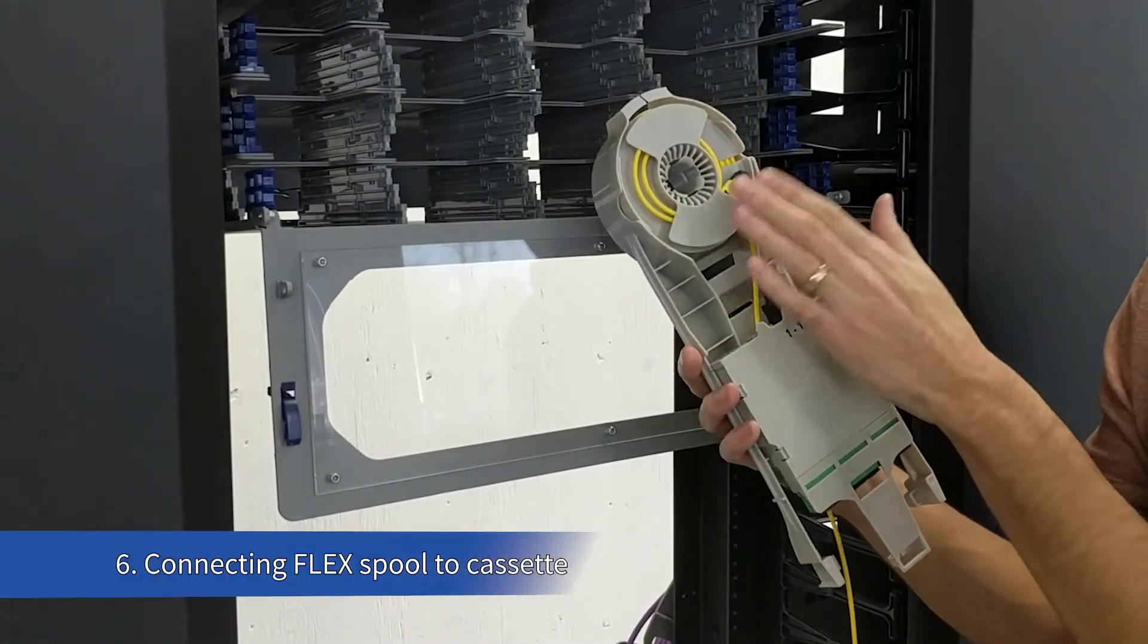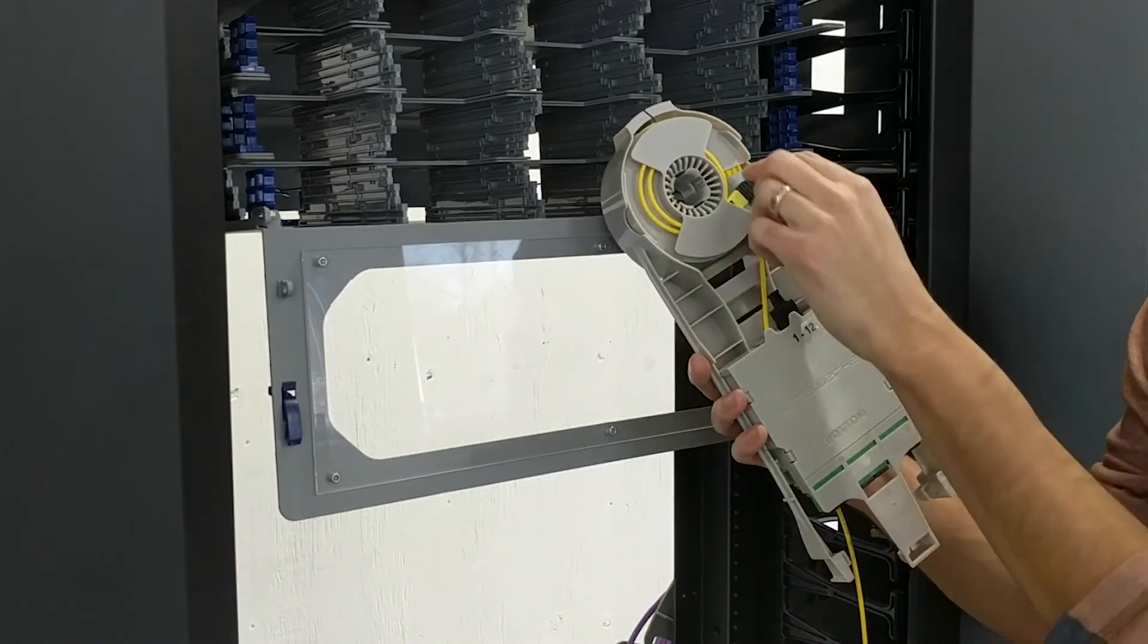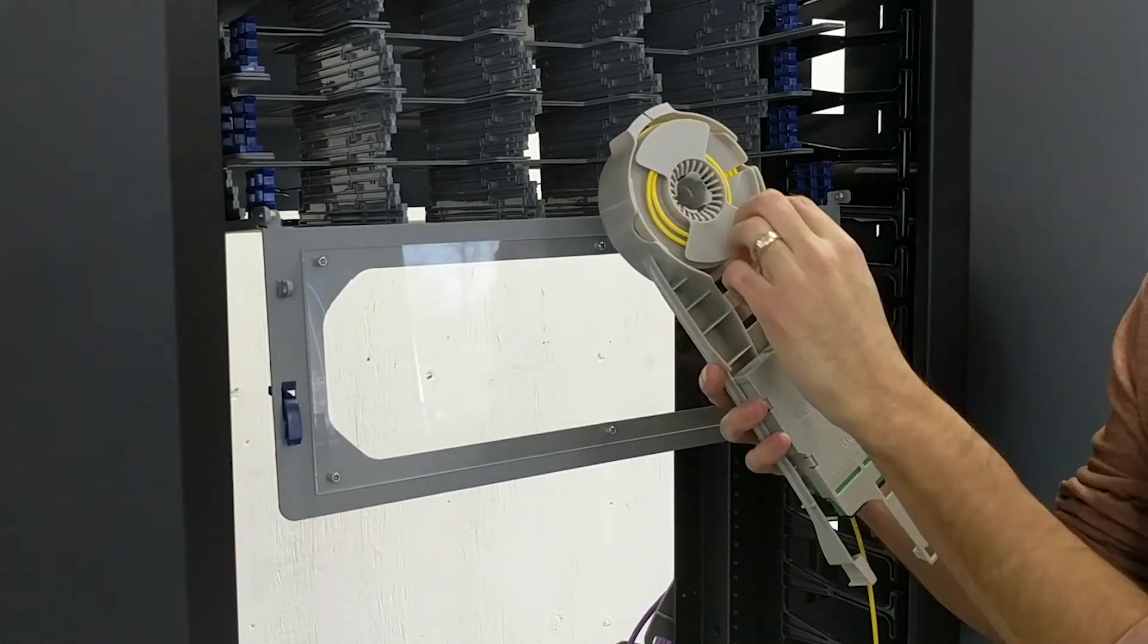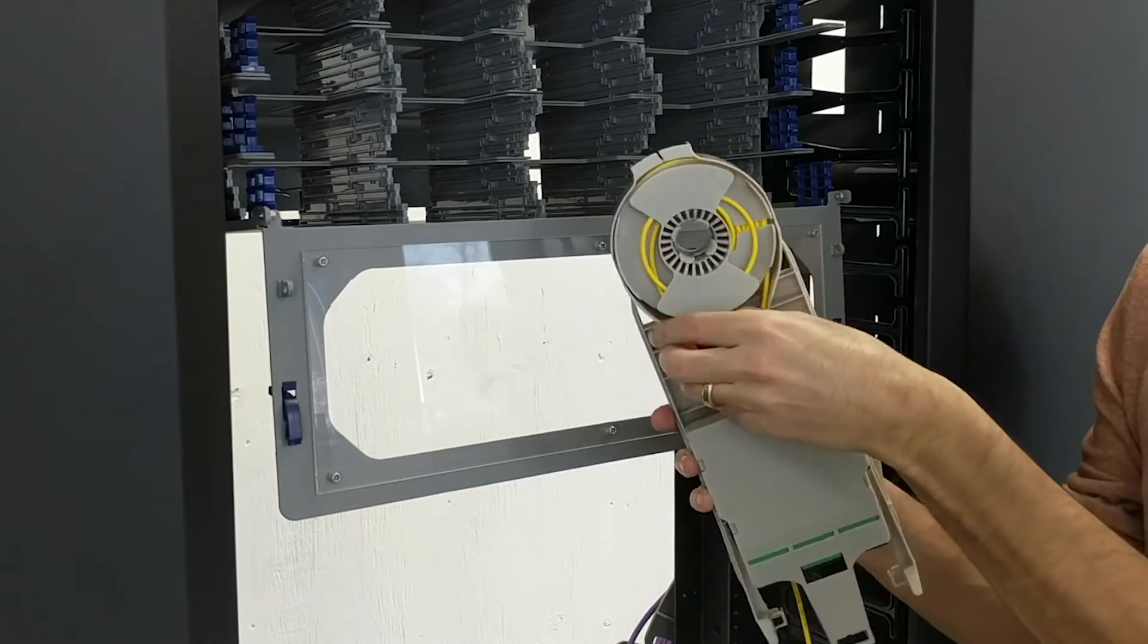Once your spool is locked in place, you will have access to the MPO connector that can be connected directly into the back of the distribution module, shown in this example.